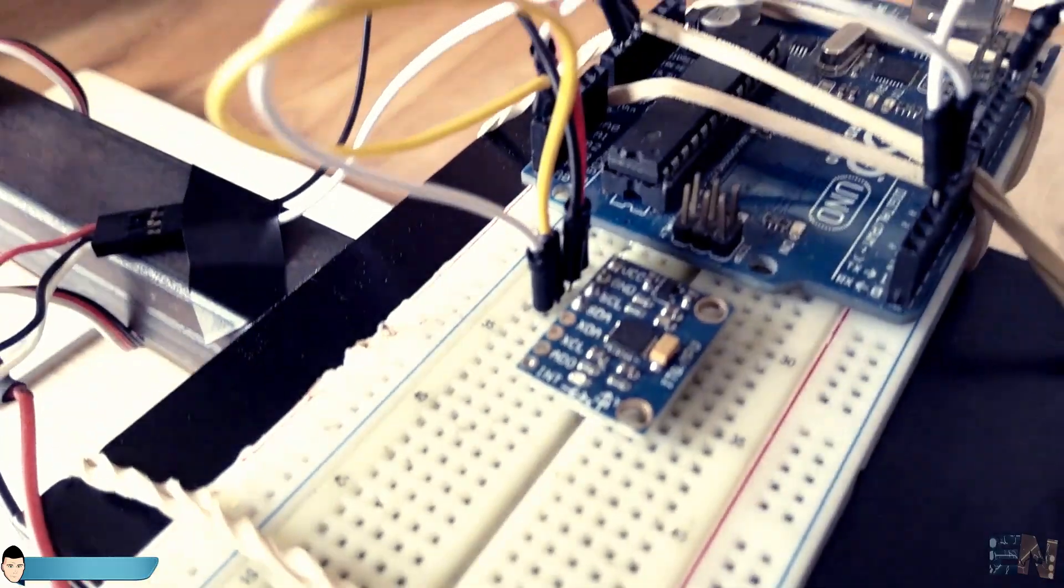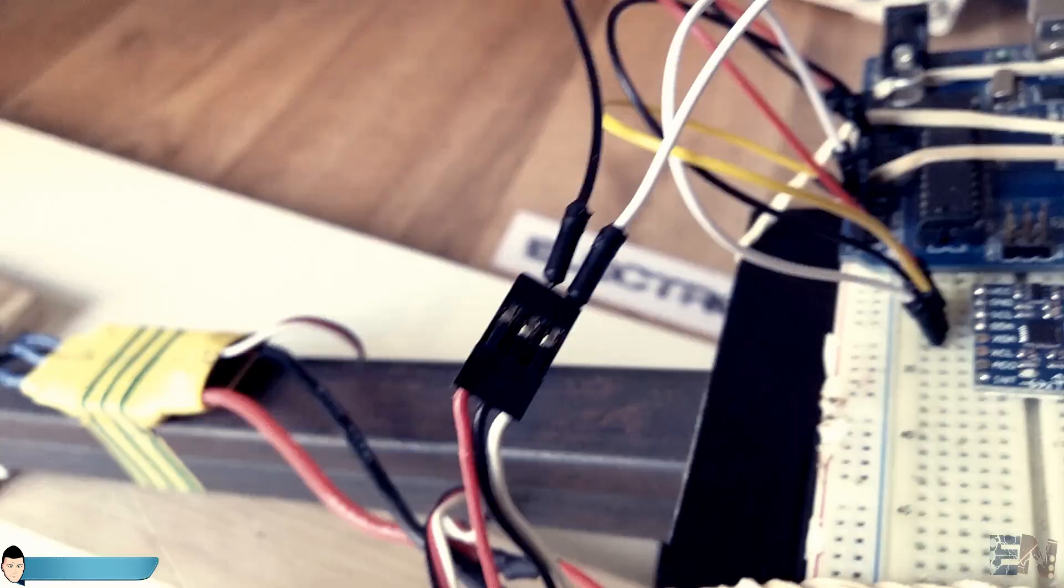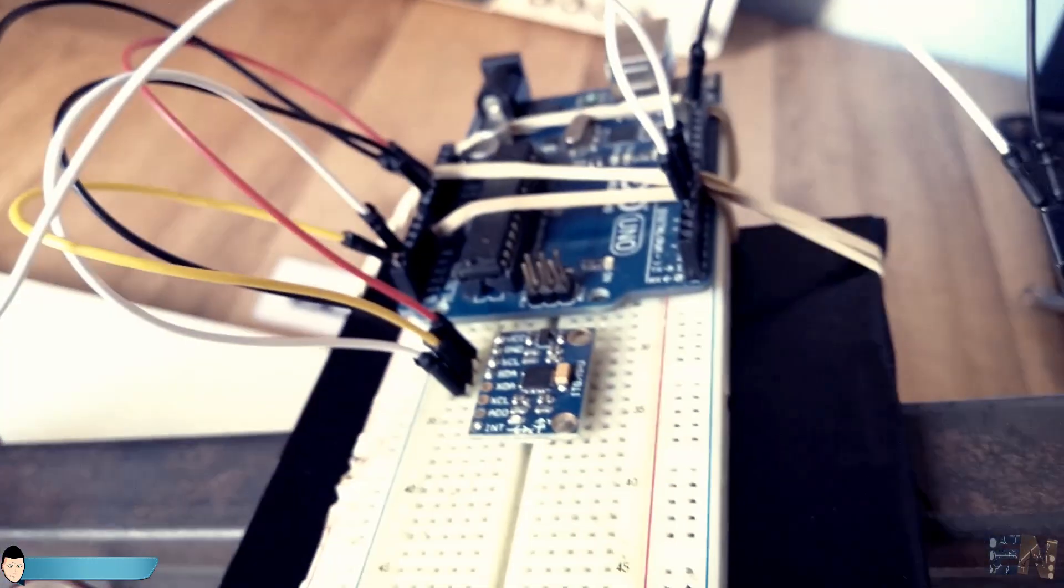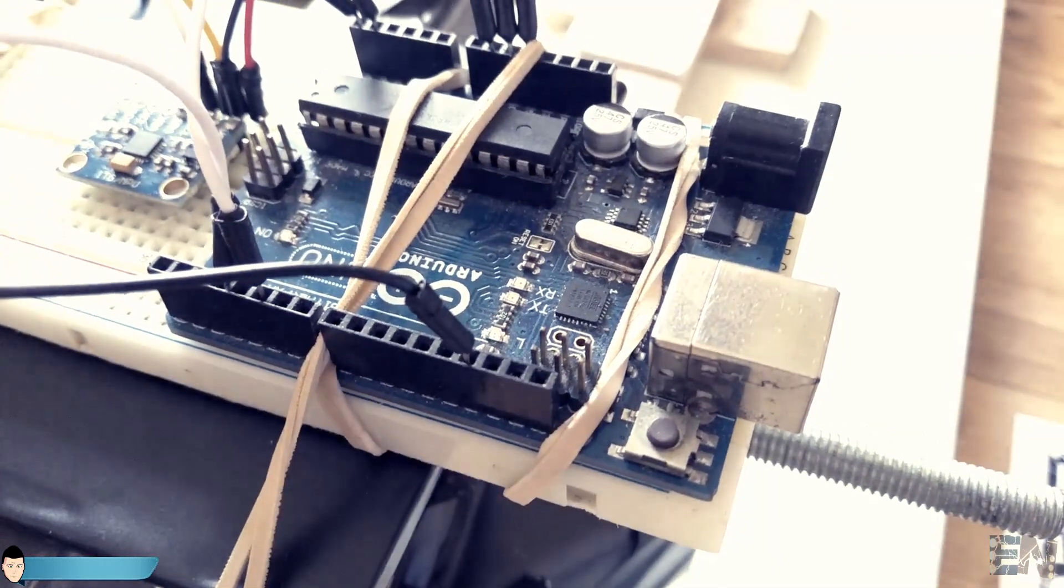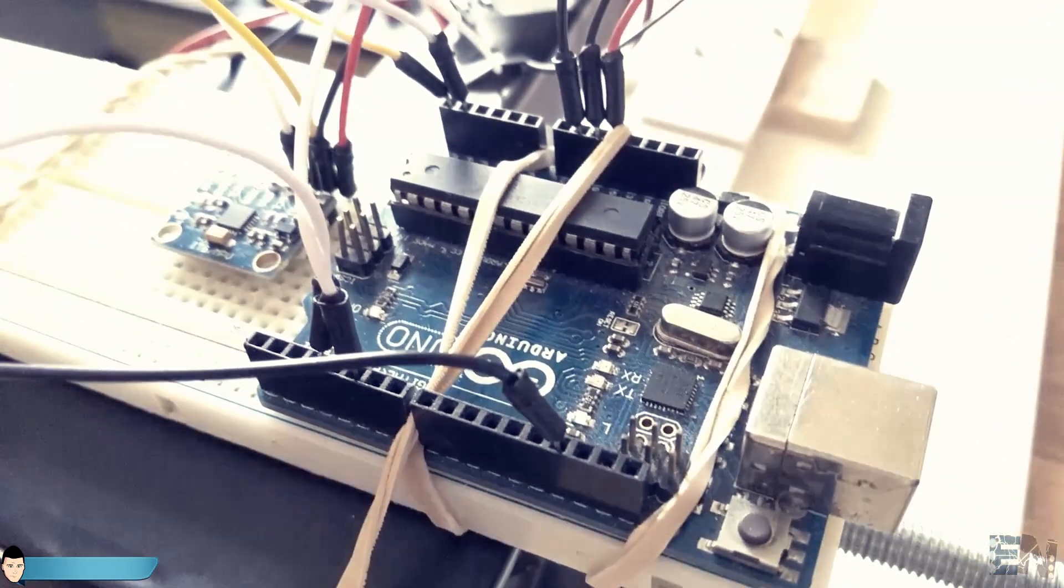The MPU6050 I2C connection is done. The ESC signals are connected and the power supply is ready to go. The only thing left is to program the Arduino.